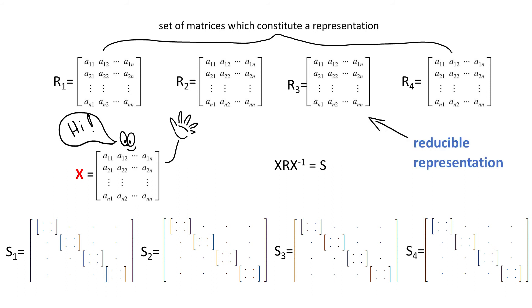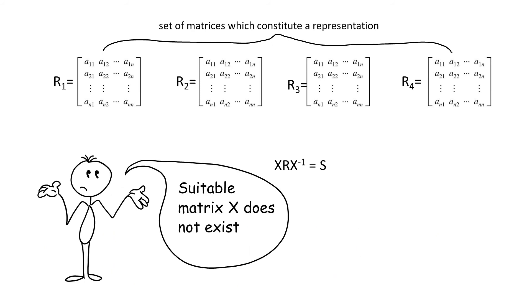If, on the other hand, it is not possible to find a matrix X which would transform the original set of matrices into block diagonal form, then such a set of matrices are already in the simplest form.